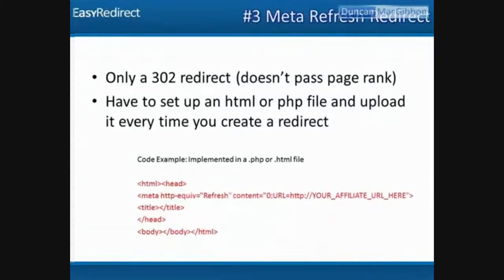The third way — my personal favorite — is a meta refresh redirect. The downside is it only does a 302 redirect. You set up either an HTML or PHP file, copy and paste the code shown in red, and change the affiliate URL placeholder to your actual affiliate URL. The downside again is it's a 302 only, and it takes about a minute to set up each time. But it's still better than any free public cloaking service.